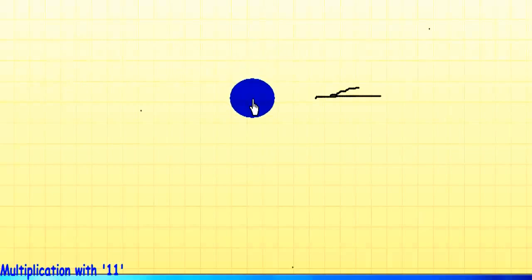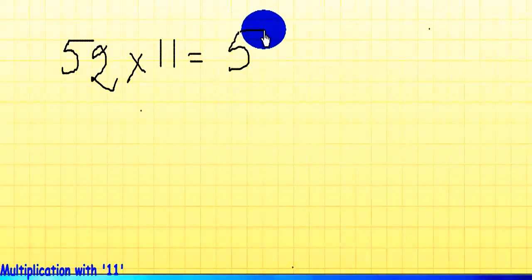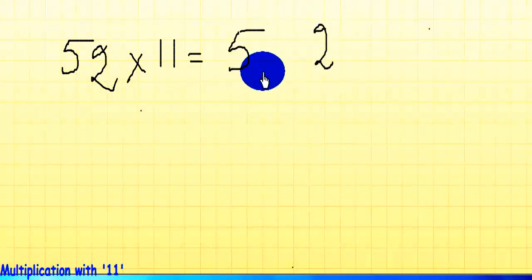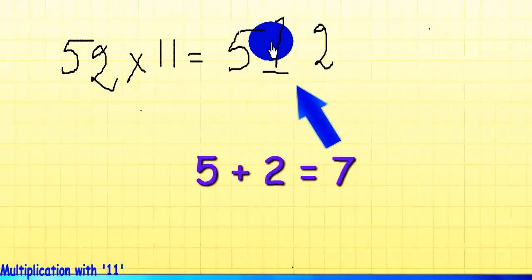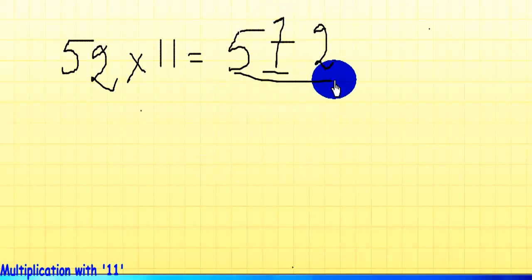Let's take another example, this time 52 times 11. Same as before: 5, 2, and the sum of 5 and 2 here is 7. That's the answer: 572.